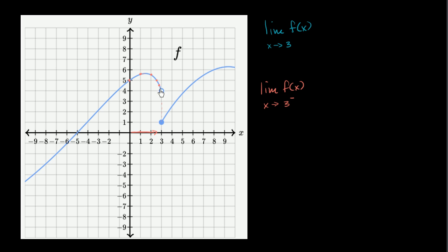And so it looks like as x approaches 3 from values less than 3, it looks like our function is approaching 4. So I would say the left-sided limit of f(x) as x approaches 3 is 4.